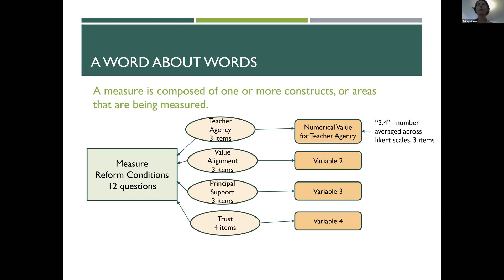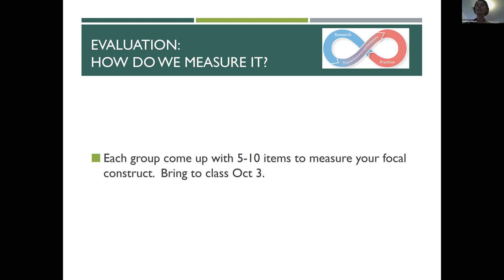Each group is going to come up with five to ten items to measure your focal construct. You're going to define it using resources — the internet, scholarly articles, emailing me, and asking Dr. Garbessi — and it doesn't have to be perfect, so don't agonize over it. You'll bring your five to ten items to class on October 3rd because we're going to workshop them, talk about good items, items that may have some issues, and get them down to maybe three to five items per construct. Please have them ready to go.